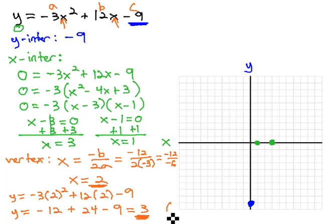x comma y is a point, 2 comma 3 is our vertex point. Right 2, up 3, and we have our vertex.